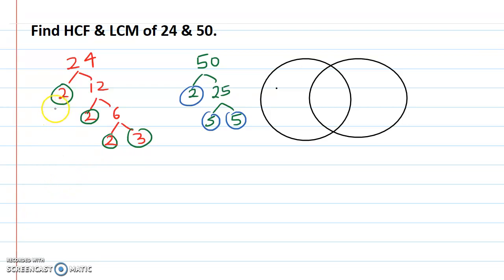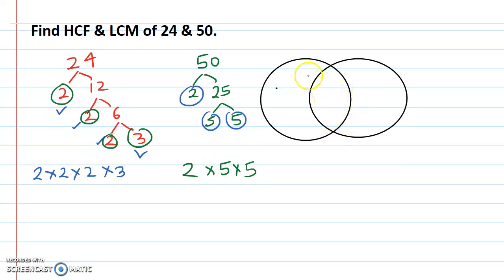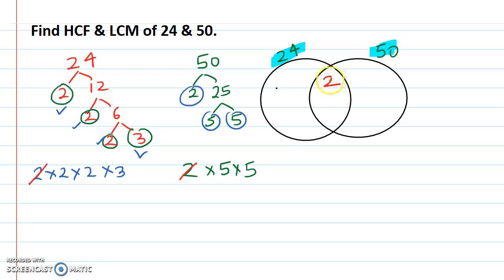Let us write down the factors neatly. For 24 there are three 2s and one 3. For 50 there are one 2, and two 5s. There are two circles again — one for 24 and one for 50. What is common? There is a 2 here and a 2 here, so their common part is this one 2. There is no other common number — 2 and 3 from 24 are not in 50. Left over in 24 is 2, 2 and 3. Left over in 50 is 5 and 5.